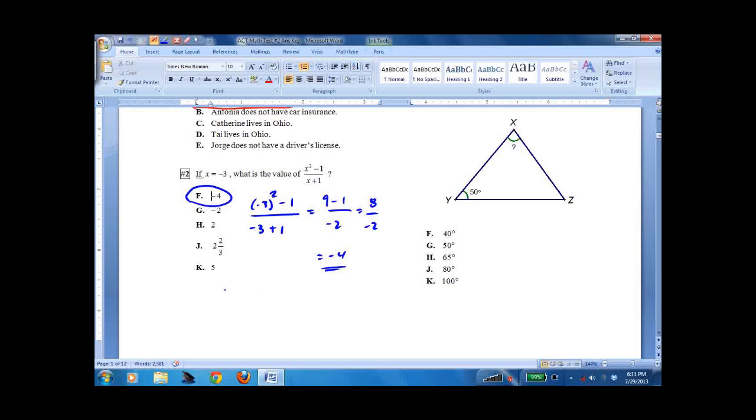The better way to do it is to notice that the top factors, and the bottom is already x plus 1. So when you put negative 3 in there, you get negative 3 minus 1 equals negative 4. This x squared minus 1 shows up a lot on the ACT. You have to know how to factor it very quickly on a regular basis.